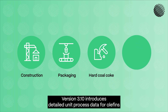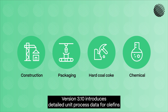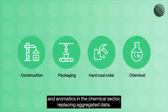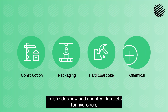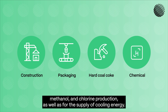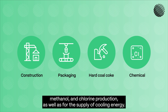Version 3.10 introduces detailed unit process data for olefins and aromatics in the chemical sector, replacing aggregated data. It also adds new and updated datasets for hydrogen, methanol, and chlorine production, as well as for the supply of cooling energy.